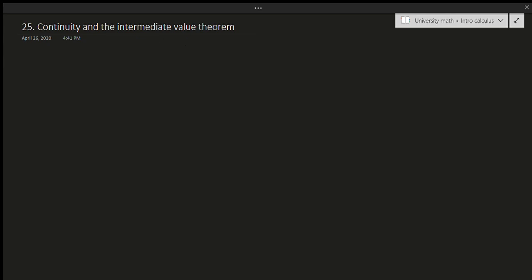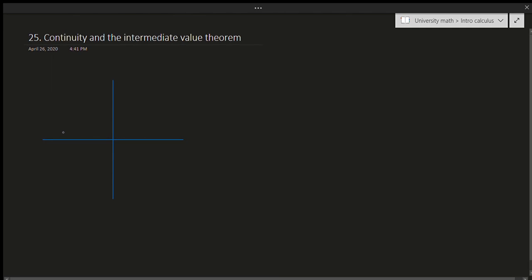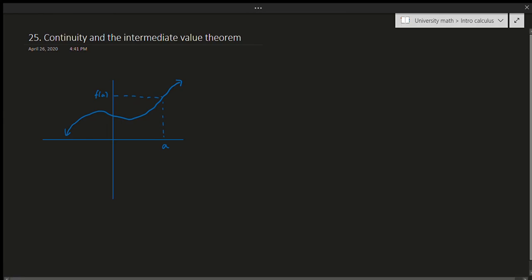Continuity just means that on a graph — suppose we call it f(x) — there are no break points. If I draw an axis and a graph that looks continuous, notice there are no break points. At any value 'a', there is a corresponding f(a) value, and regardless of where I pick 'a', there are no holes, jumps, asymptotes, or anything weird going on.